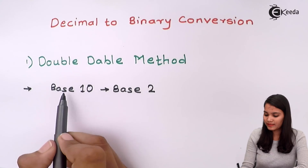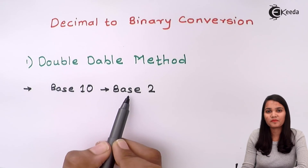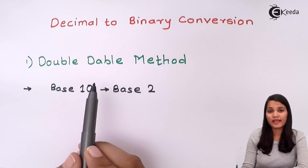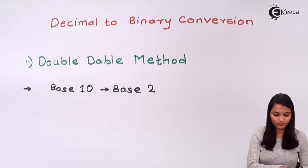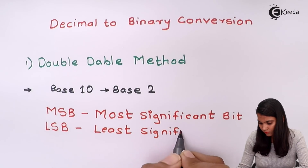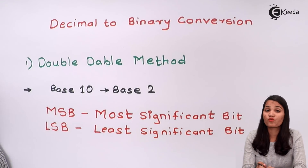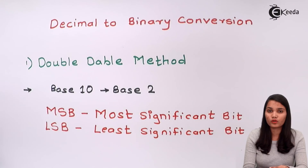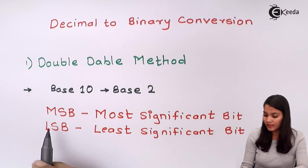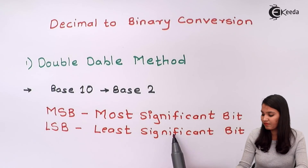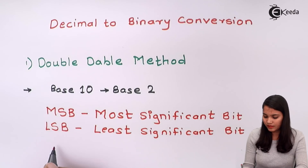The double-double method converts a base 10 number into the base 2 number. Before going to the double-double method, let's see what is meant by MSB and what is meant by LSB. MSB and LSB play a very important role in conversion, so we first have to understand them. MSB means most significant bit and LSB means least significant bit.